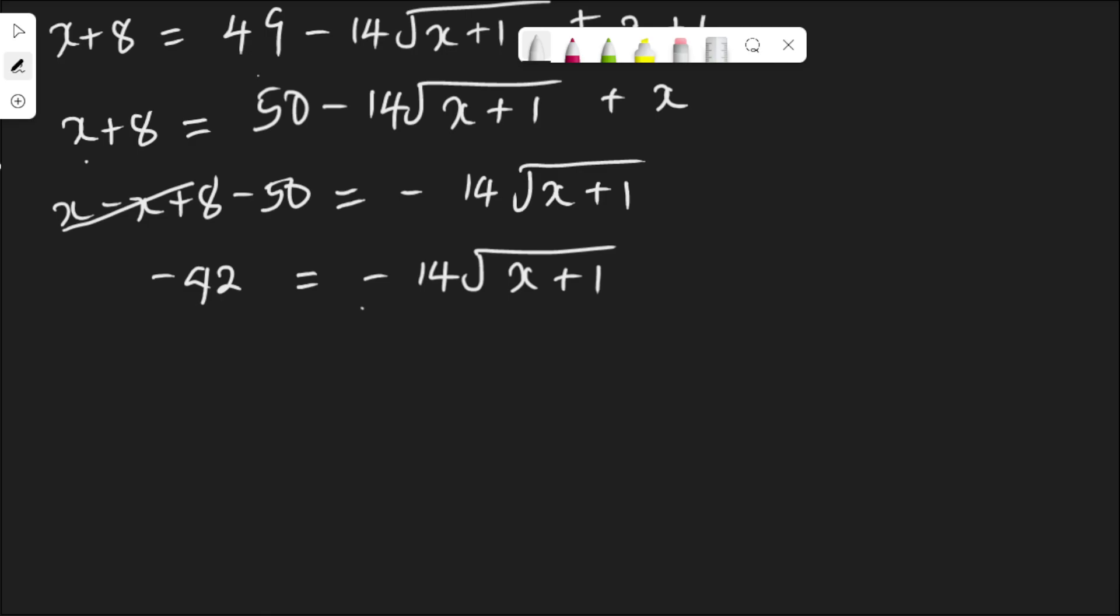Dividing both sides by negative 14. Negative 42 divided by negative 14 is 3, and this will be 3 is equal to root x plus 1.